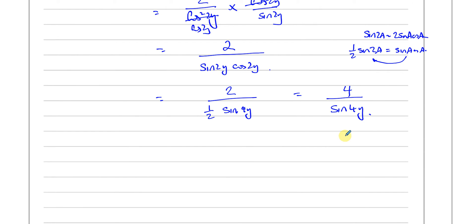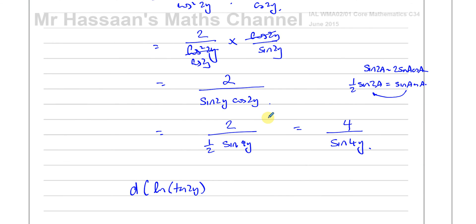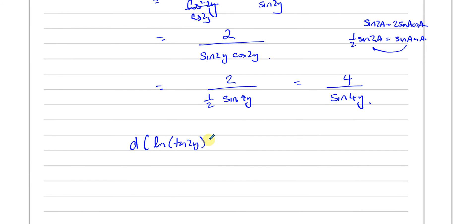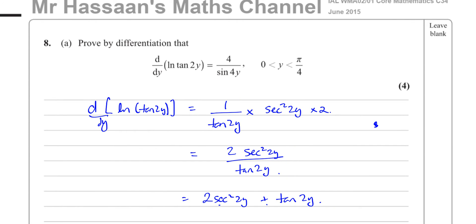So we can confirm that the differential of ln(tan 2y) with respect to y is equal to 4 over sin(4y), as required. That's the answer for part A.